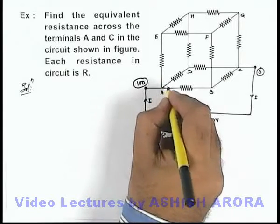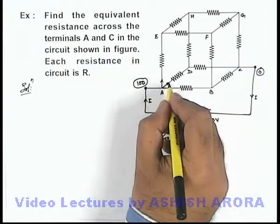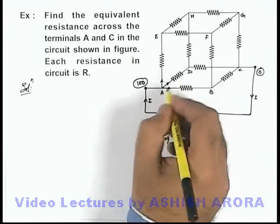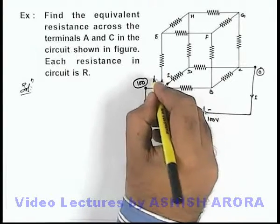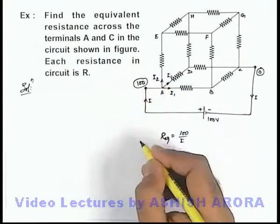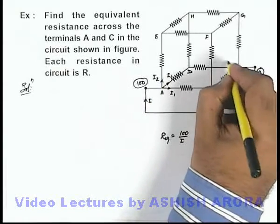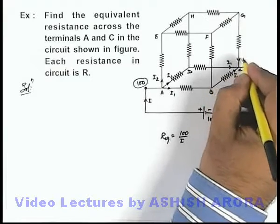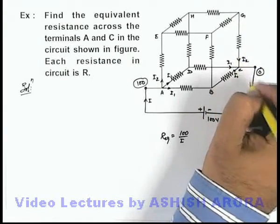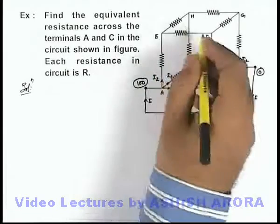And here i'll be divided in 3 branches. Here you can see that the lower 2 branches are identical in all respects, so here current will be i1, i1, and in this branch we can take current to be i2. Similarly at the time of recombination, here i1 current will be coming through these 2 branches and i2 will be coming and recombining to produce the same current i. In this situation, further i2 will be divided.